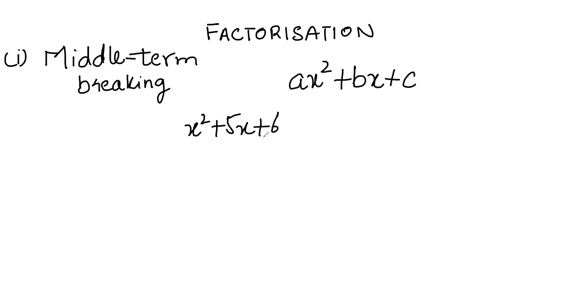We will factorize this equation using the phenomenon known as middle term breaking. First, you have to multiply the constants a and c. Here, the product of a and c would be 6. Then you have to take out the factors of the product of a and c.